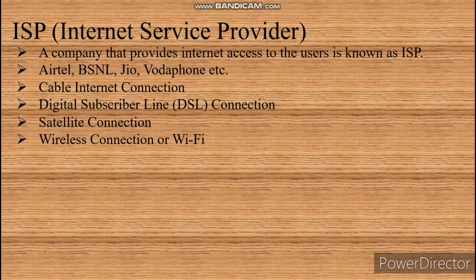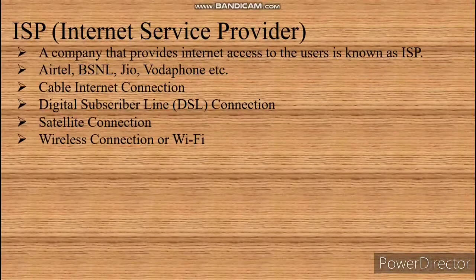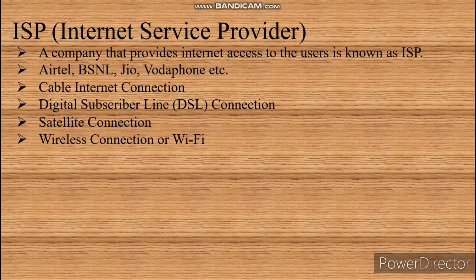The hardware required for establishing the connection, such as a router or cable, is usually provided by the company. The hardware which is required for connection is provided by the company when you register with an ISP for its services.